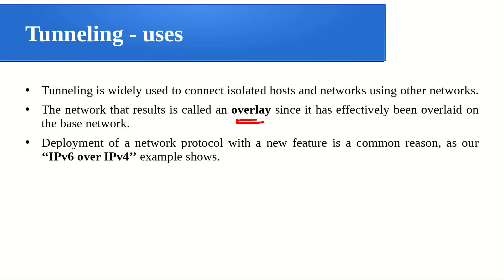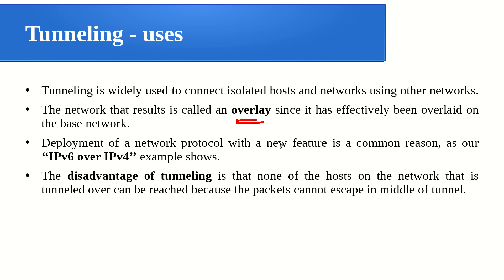The deployment of a network protocol with a new feature — like IPv6 over IPv4 — is a common reason for tunneling. You can experiment with the new protocol with the help of tunneling over the existing IPv4. The disadvantage of tunneling is that none of the hosts on the network being tunneled over can be reached, because packets cannot escape in between. Through the IPv4 network, no machine attached to it can understand what is inside the wrapped packet — the packet is not destined to anyone on that IPv4 network.